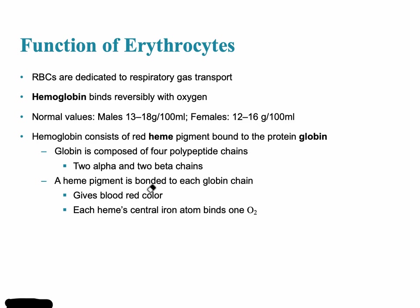Each hemoglobin molecule has two main components. The first is a red heme pigment, which is bound to a protein globin chain. This globin chain is composed of different polypeptide chains, and the heme pigment is bonded to each of these globin chains.